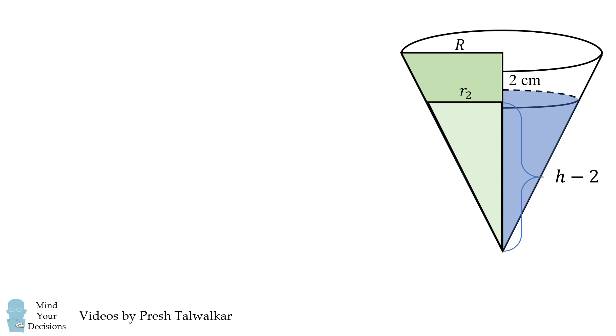We now want to solve for the volume of water and that will be the volume of this small cone. So we get the formula pi over 3 r2 squared times h minus 2. Again, we'll use similar triangles.